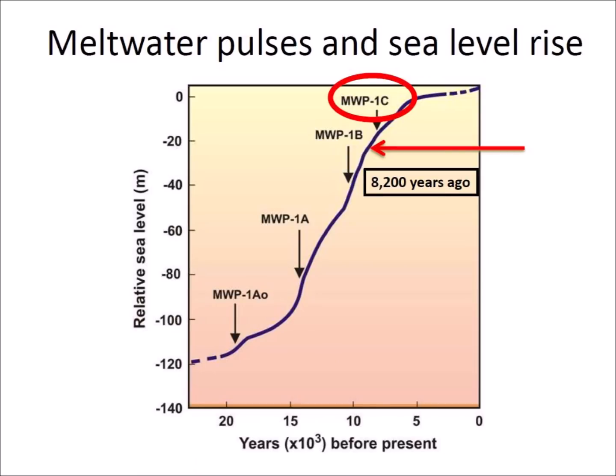A fourth interval of rapid sea level rise between 8,200 and 7,600 years ago was identified by a decrease in coral growth in the Caribbean. This increase, called Meltwater Pulse 1C, has been linked to the catastrophic drainage of glacial lakes Agassiz and Ojibwe starting around 8,400 years ago, which released a volume of about 105 cubic kilometers. This pulse only produced about one meter of global sea level rise. Large-scale glacial melting essentially ceased by the mid-Holocene period about 6,000 years ago.